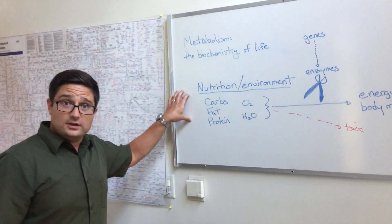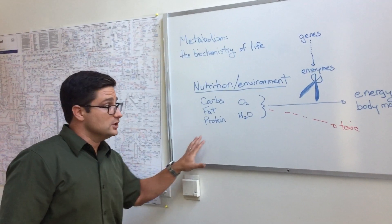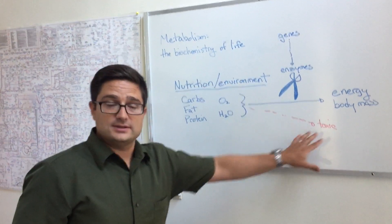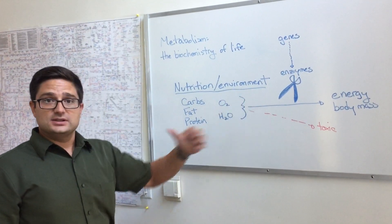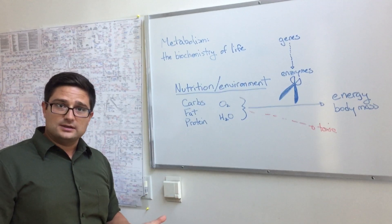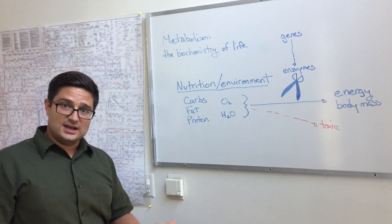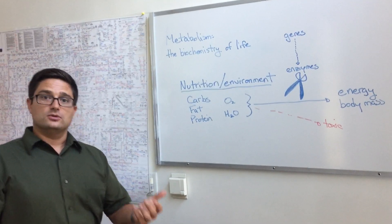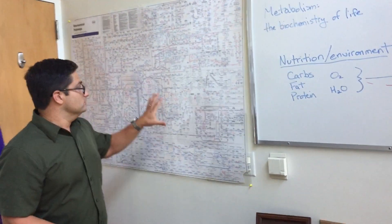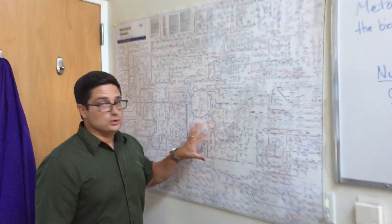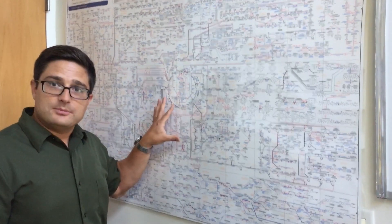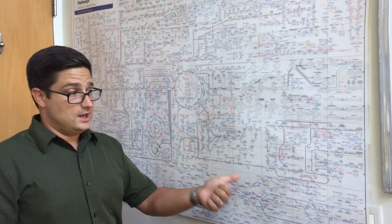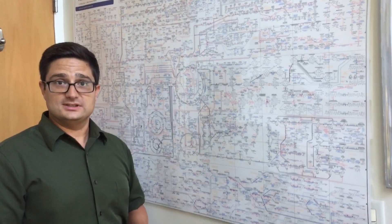Alternatively, if we overfeed ourselves or starve ourselves, we can also see these issues arise. Metabolic processes are often dysregulated in the context of diseases such as cancer, diabetes, or neurodegenerative disorders. So it's our hope to explore these metabolic maps in more detail to identify potential causes and cures for these diseases.